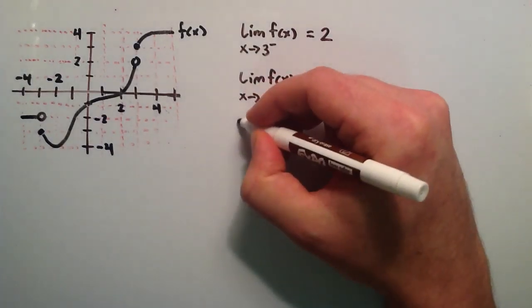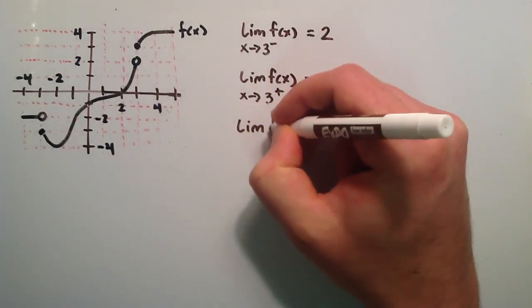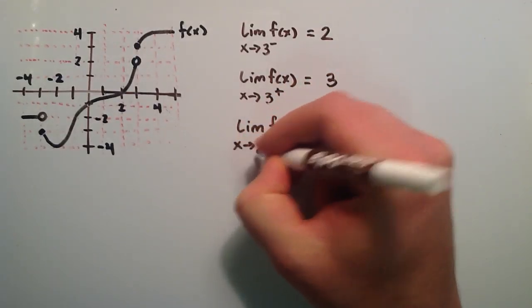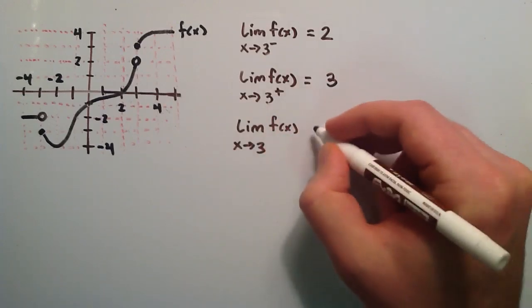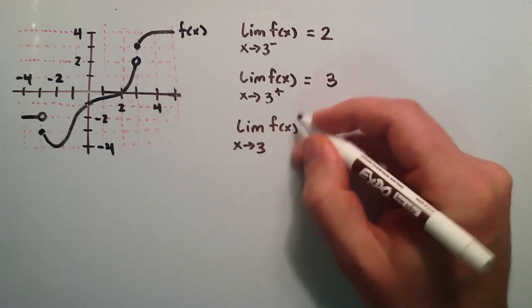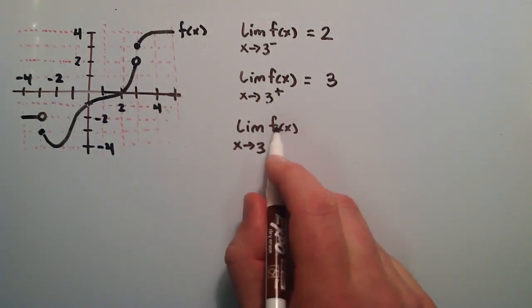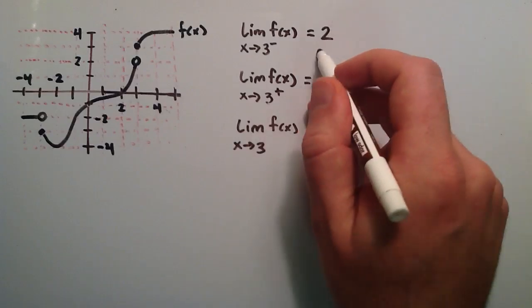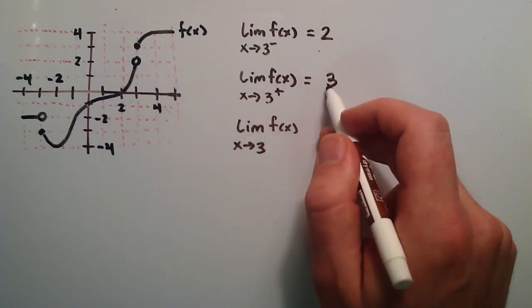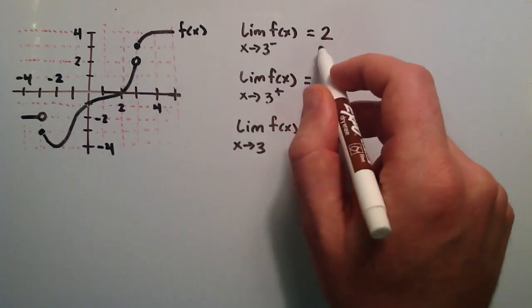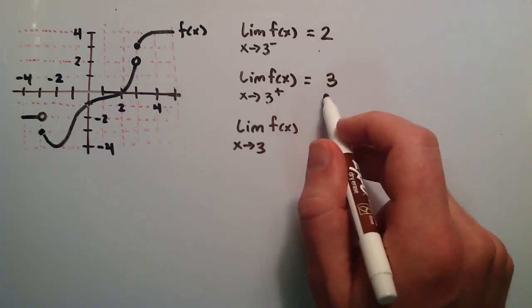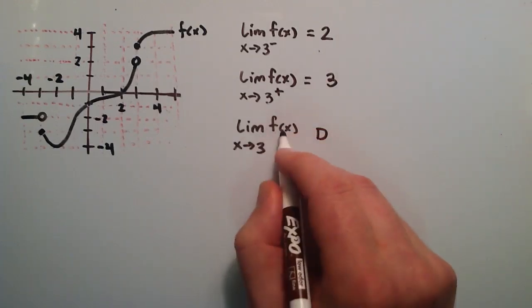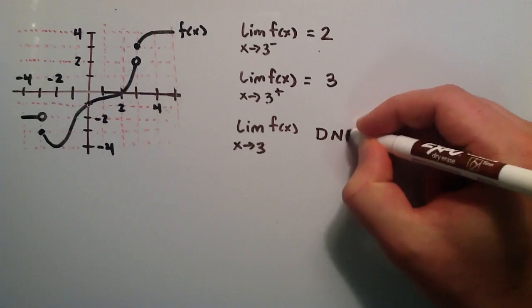What about the limit of f of x as x approaches 3 in the general case — not specifying left or right? Well, we have to look to see if the left-hand and right-hand sides produce the same value. And because we get a different value approaching our function from the left than we do from the right, we say that the limit of f of x as x approaches 3 does not exist.